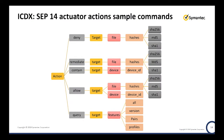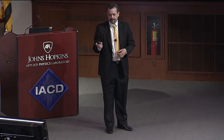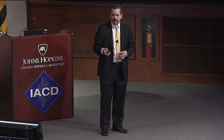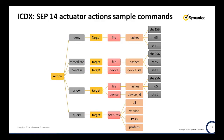I tried to map out the commands and targets that we support. Here are some of the targets, like file and device, what you can do to those files and devices, and what's required for those particular targets. These are the specifiers — you need a SHA-256, MD5, or SHA-1 if you want to delete a file. The command for deny a file would look like: action deny, target file hashes, SHA-256. Pretty easy to read, right?